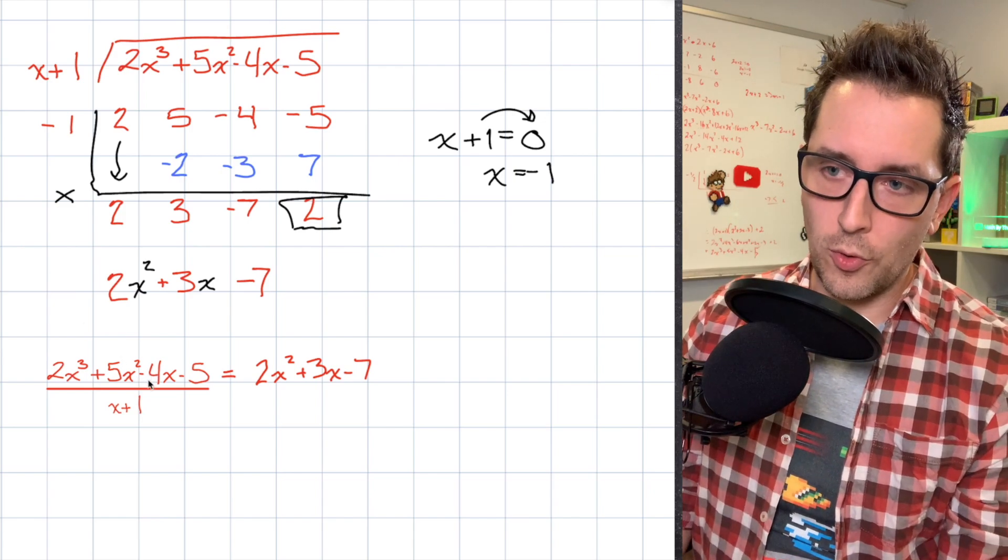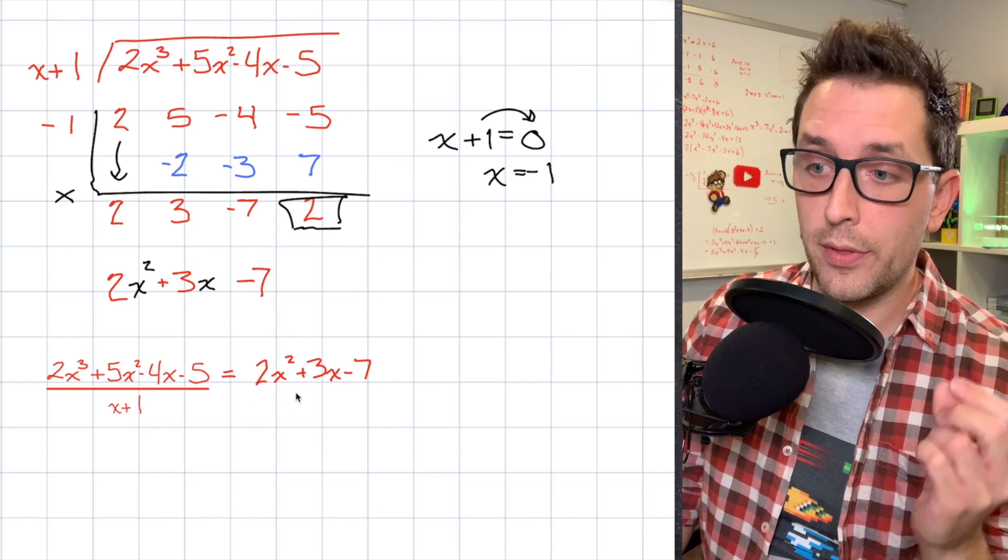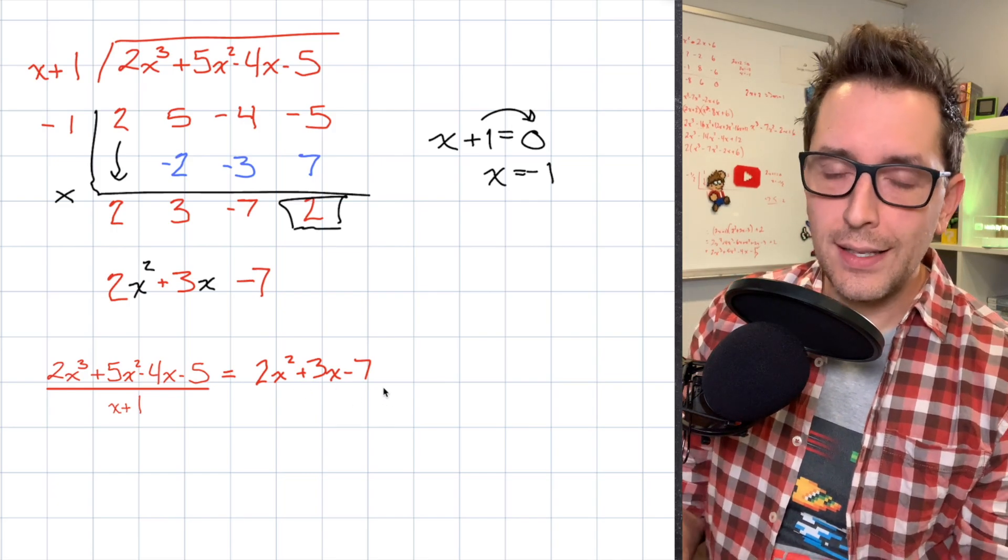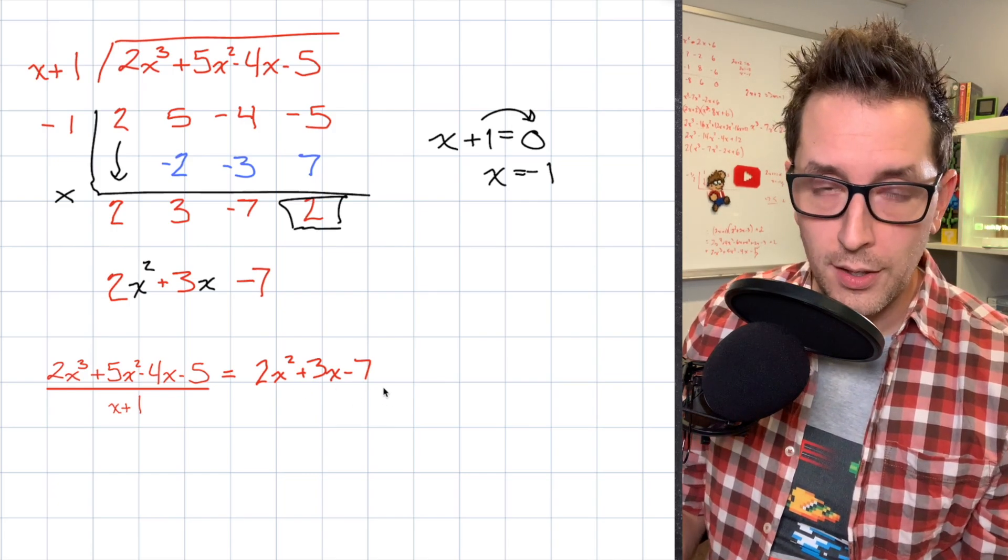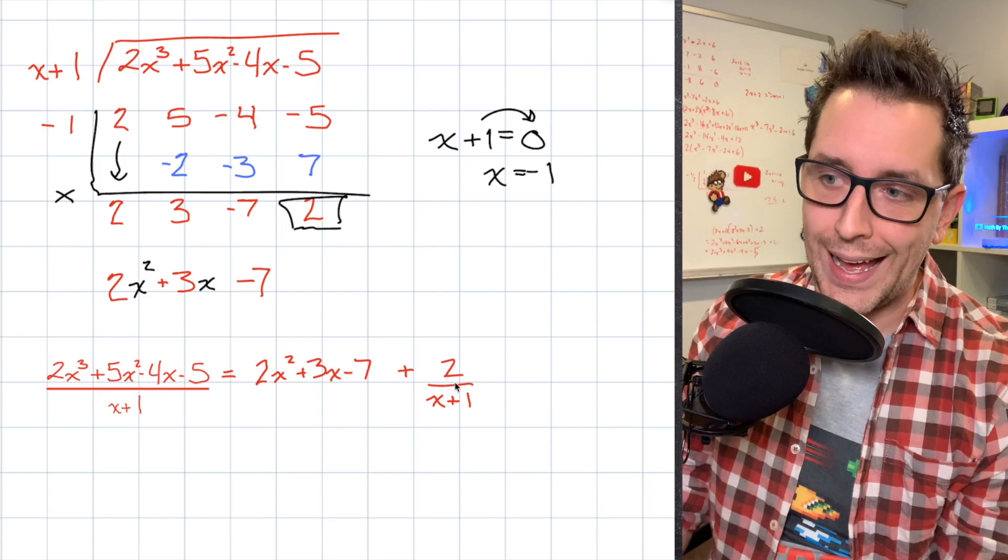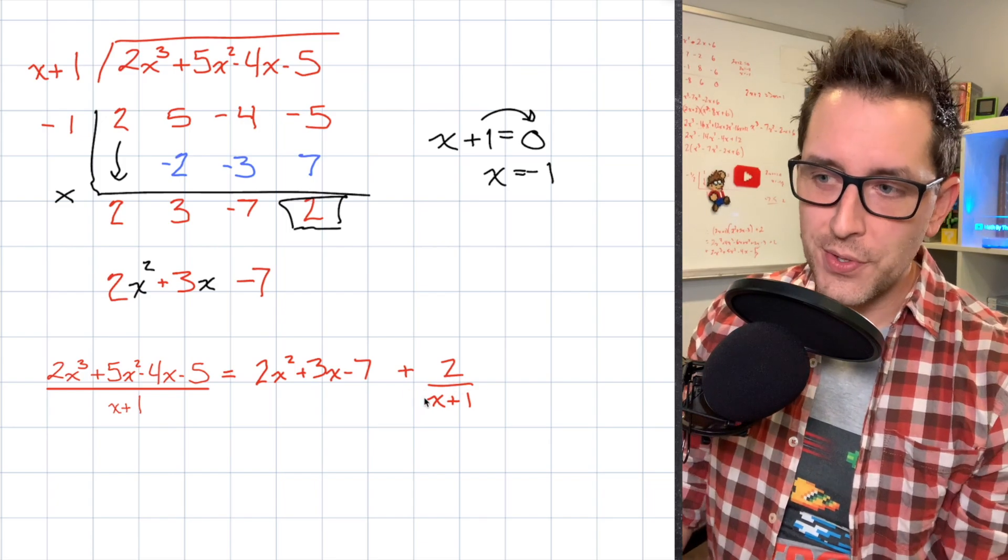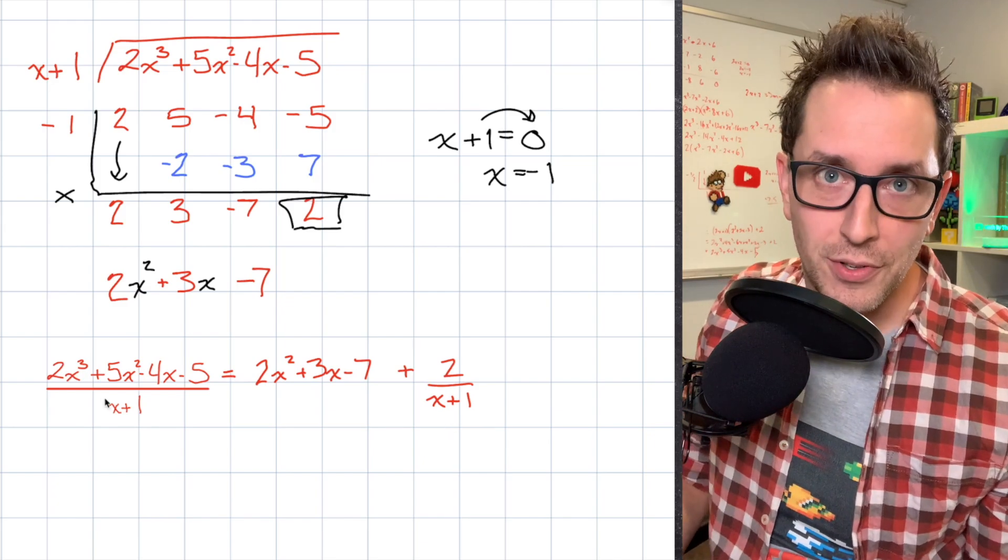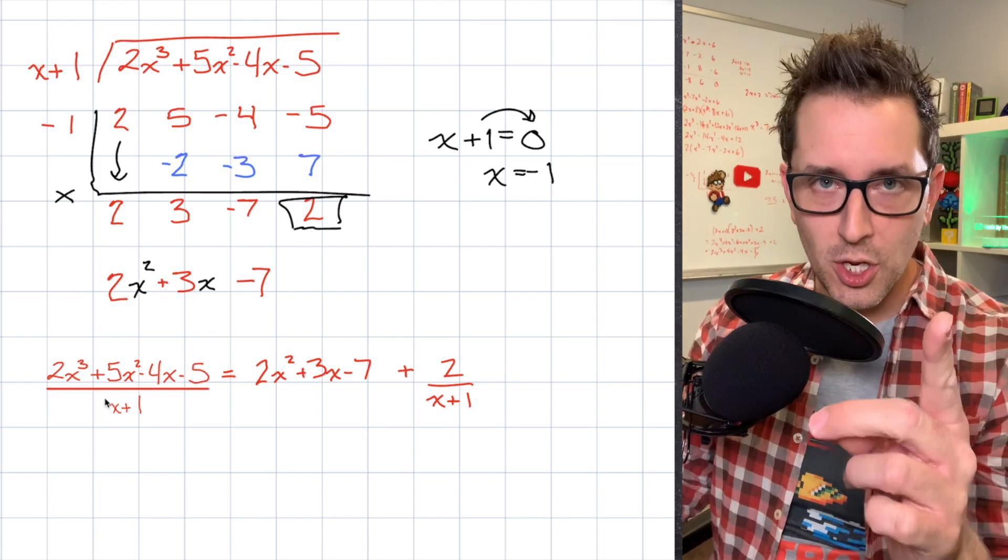Now, when I performed this division, I ended up with a trinomial of 2x squared plus 3x minus 7. But I need to consider that remainder in some way. Now the way that we do that is we're going to add our remainder of 2, but we're also going to divide it by our divisor of x plus 1. Now this should feel confusing because it kind of is. Let me show you why this makes sense.